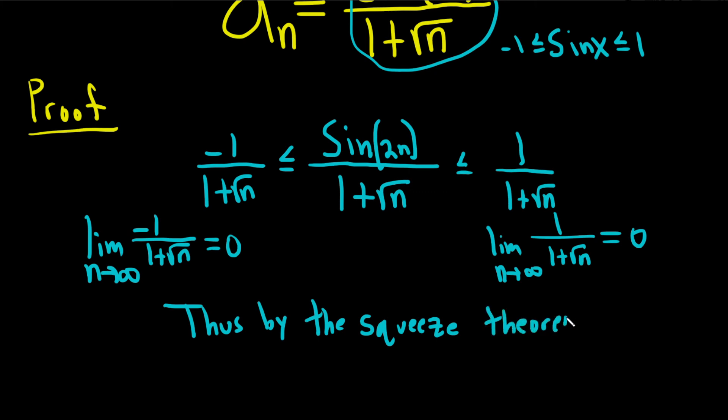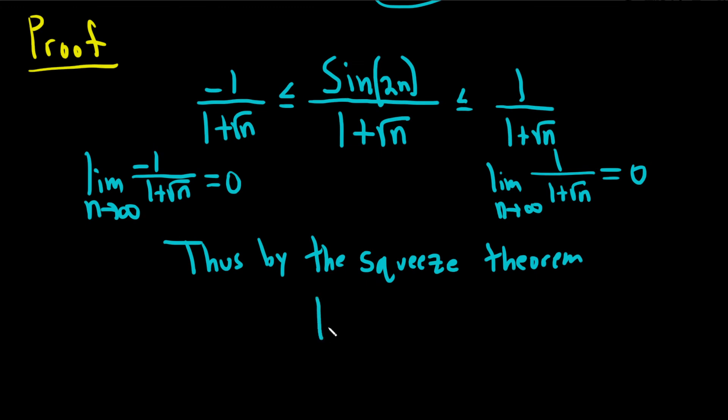So thus, by the squeeze theorem, our limit, which is trapped in the middle—the limit as n approaches infinity of sin(2n) over 1 plus the square root of n—is equal to 0. And that completes the proof.